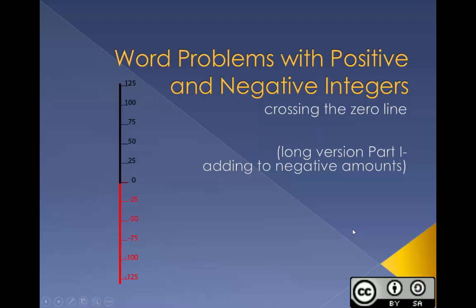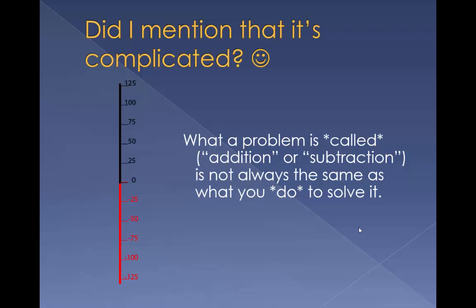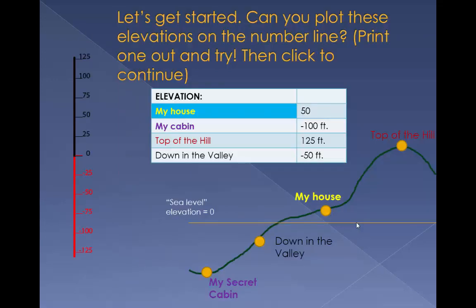Word problems with positive and negative integers — crossing the zero line. This is the long version of part one: adding to negative amounts. It's complicated. This movie will show how to solve complicated problems with positive and negative numbers, like those assigned by the Alex program, with the help of a number line. What a problem is called — addition or subtraction — is not always the same as what you do to solve it. Let's get started.